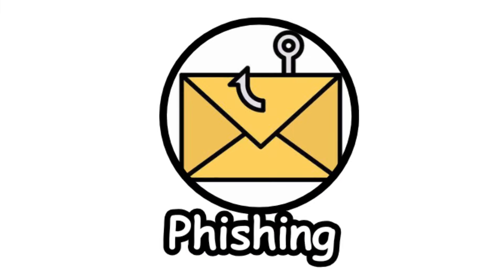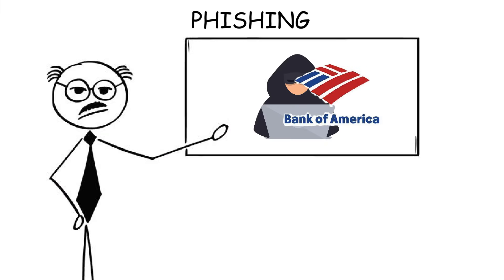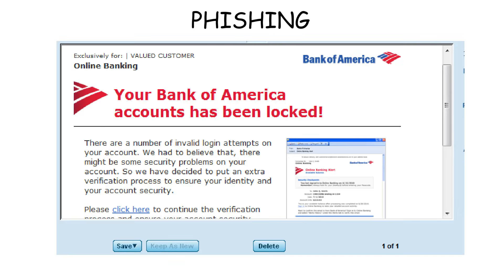Phishing. Phishing is when a hacker pretends to be someone trustworthy to trick people into giving up sensitive information. For example, you might get an email that looks exactly like it's from your bank, asking you to click a link to fix a problem with your account.